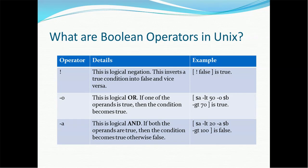For boolean operators we have basically three operators. First is the exclamatory mark, second is hyphen-o, and third is hyphen-a. The exclamatory mark is a logical negation — it inverts a true condition into false or a false condition into true. You can use it with open bracket, exclamatory mark, false, close bracket, and this condition will turn into true.